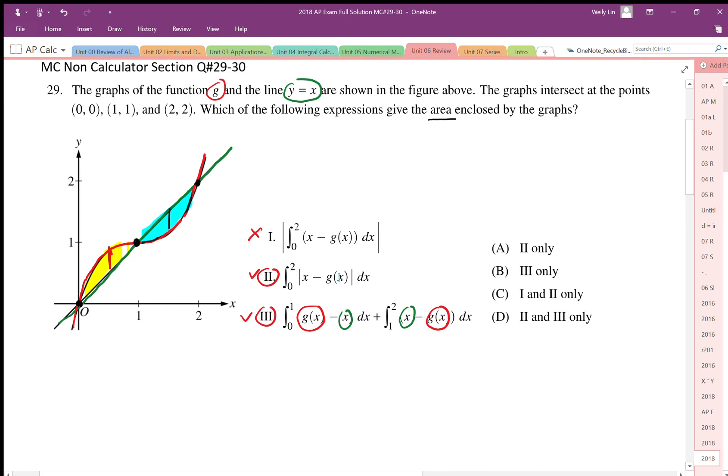This is because we absolute value after we take the sum of those areas. When we do it in this way, we're taking the absolute value of the difference, which means we're taking the absolute value of that height. So the answer then for this must be 2 and 3, or D.